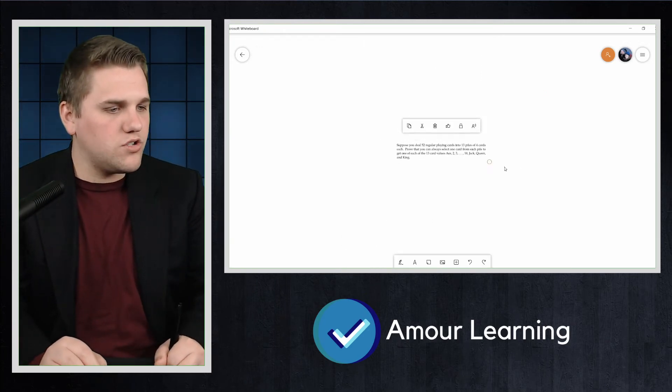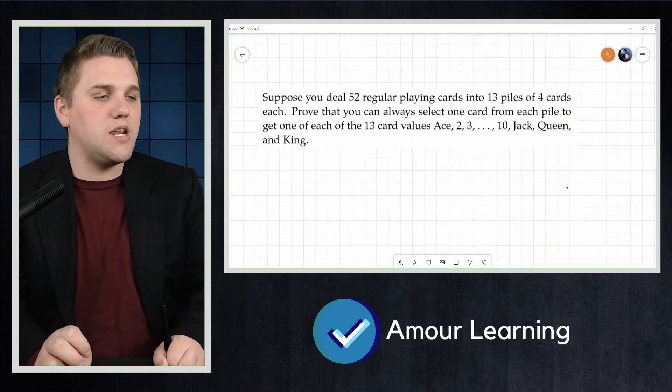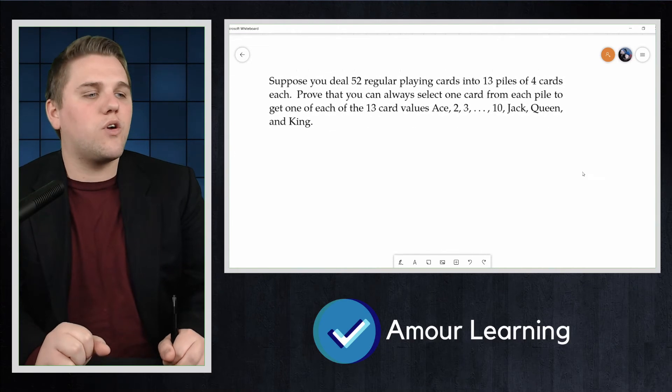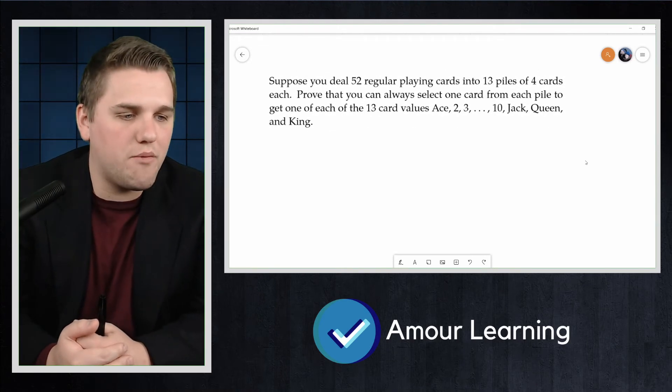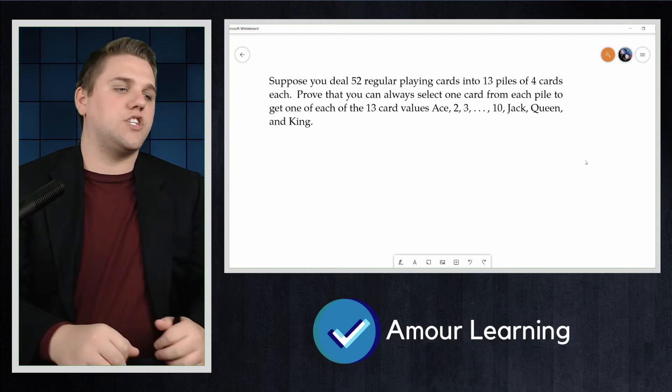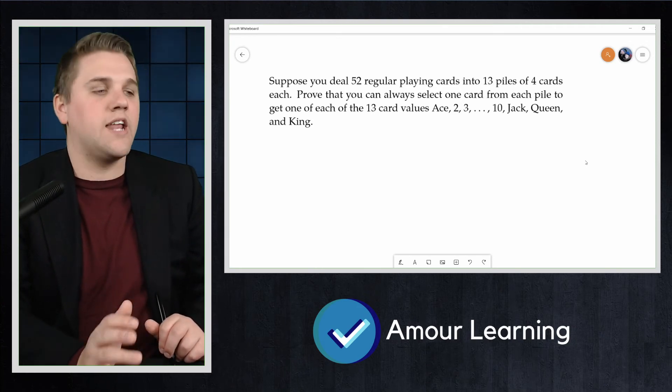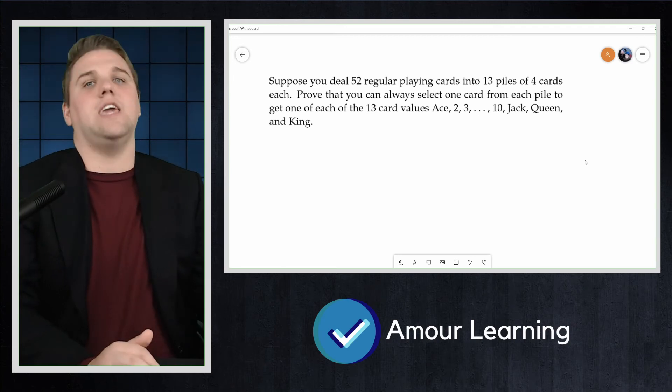Suppose you deal 52 regular playing cards into 13 piles of four cards each. Prove that you can always select one card from each pile to get one of each of the 13 card values: Ace, 2, 3, Jack, 10, Jack, Queen, and King.